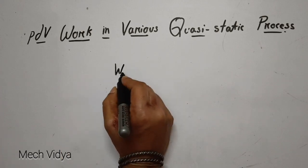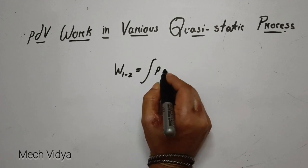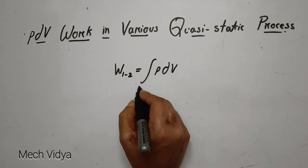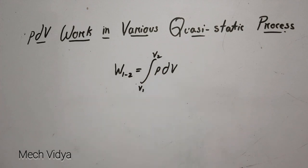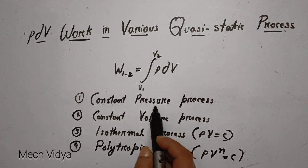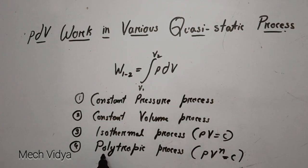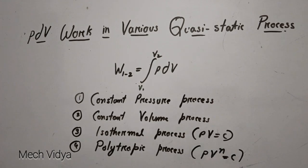In our last video, we derived a very simple relation of PdV work, which was: work done during a process 1 to 2 can be written as the integration of P into dV. In this video, we will use this relation to find out the PdV work in various quasi-static processes such as constant pressure, constant volume, isothermal, and the polytropic process. We will solve all these cases one by one.